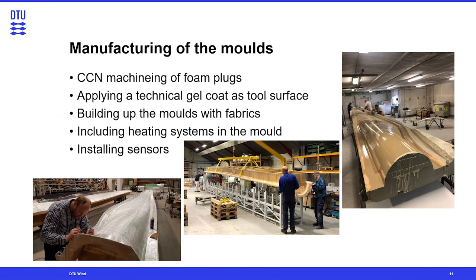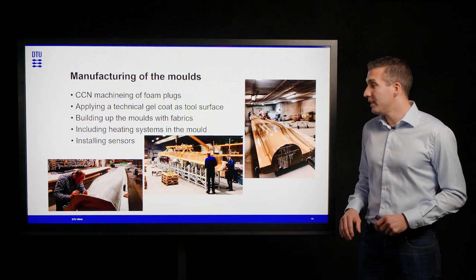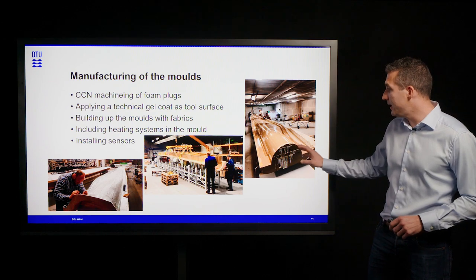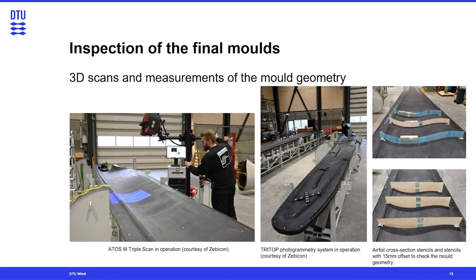Once mold design is completed, mold manufacturing can start. The first step is shaping the mold — foam plugs are CNC machined to get the blade shape. Subsequently a technical gelcoat is applied to the surface and then fabrics are rolled out to build up the mold itself. Depending on the type of mold, heating systems can be included and specific sensors installed before creating the final mold and placing it in a rack.